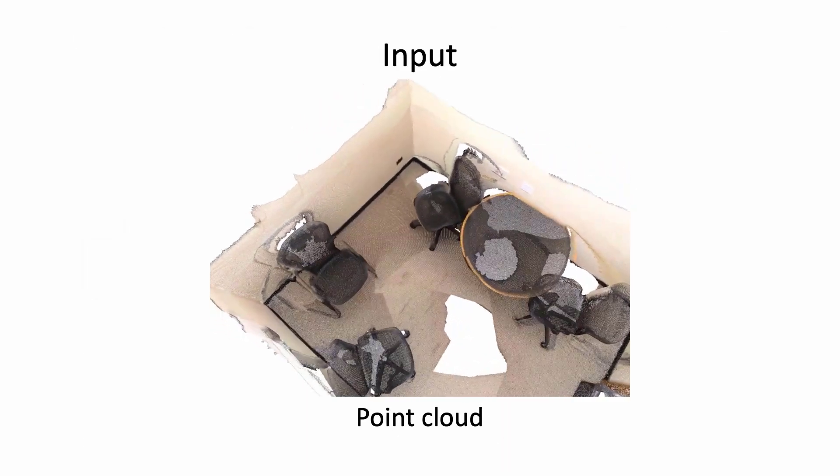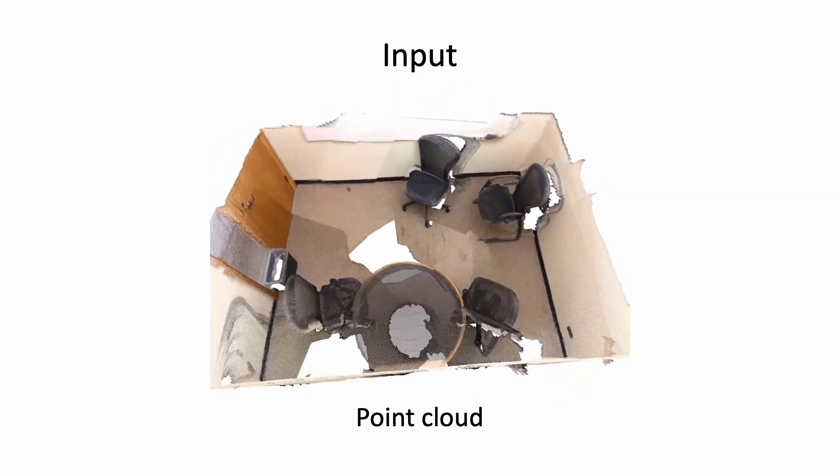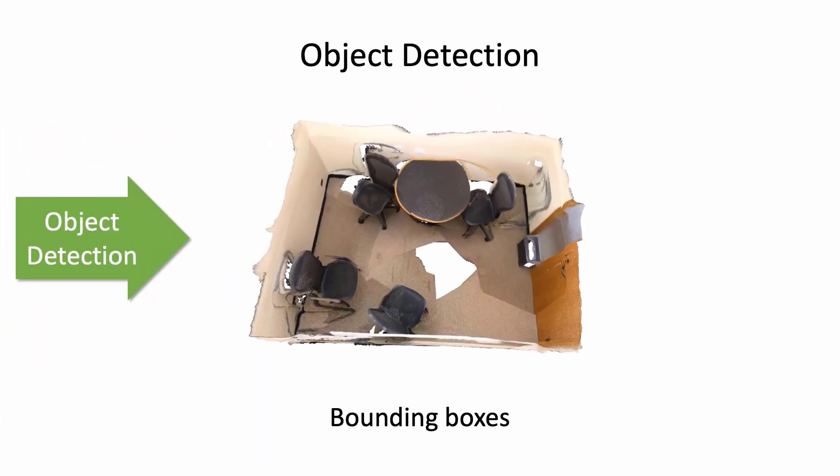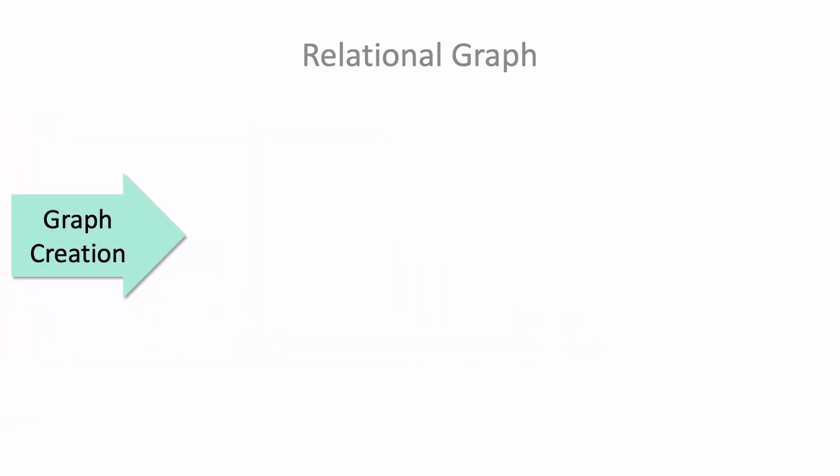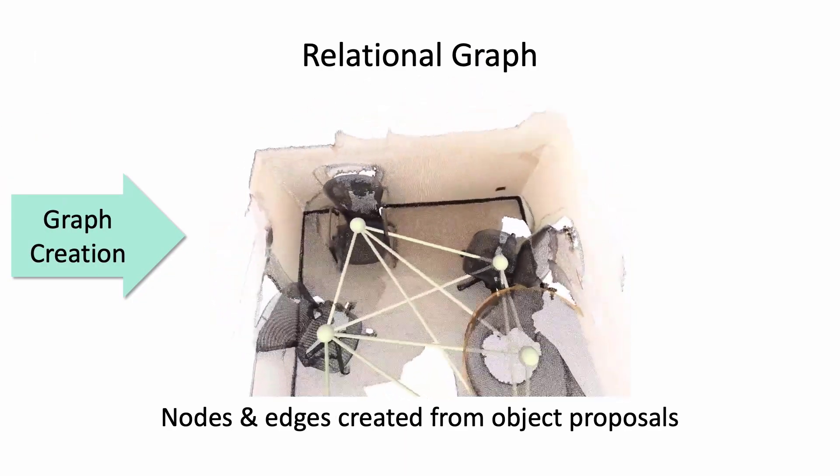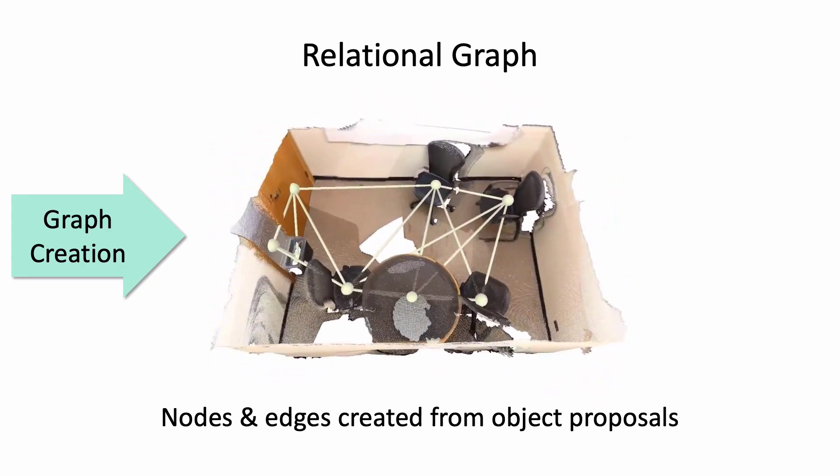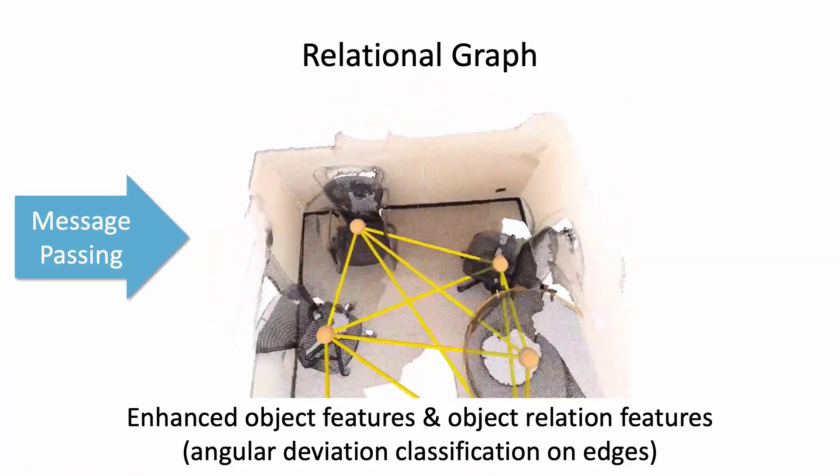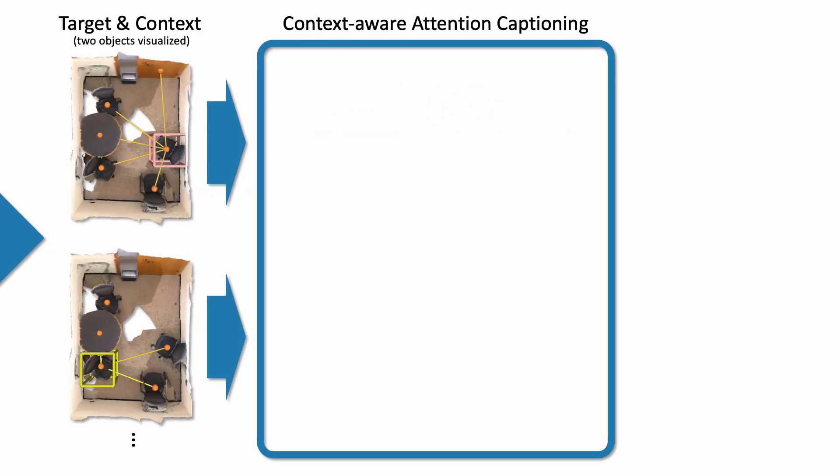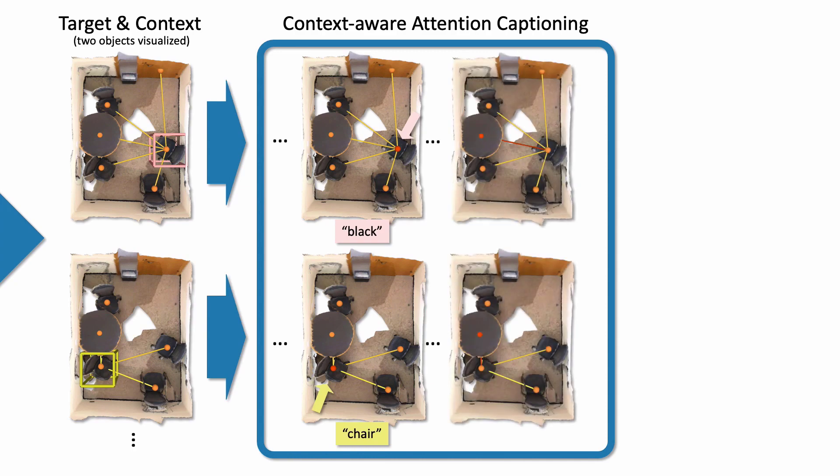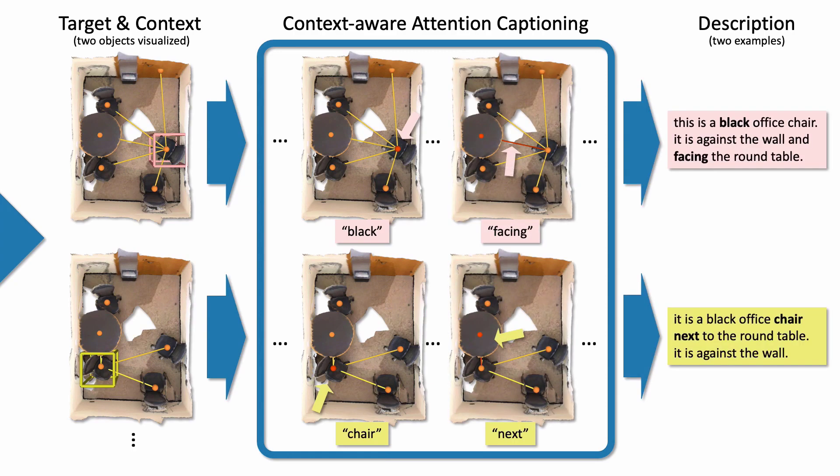Our method takes in as input a point cloud with color and normals. The object detection backbone infers bounding boxes for each object. We use these bounding box proposals to create a scene object graph. The created scene object graph is fed to the proposed relational graph module. Then, our context-aware attention captioning module takes in object and relation features to generate object descriptions.